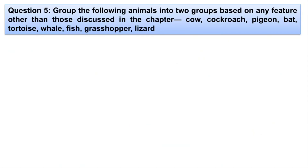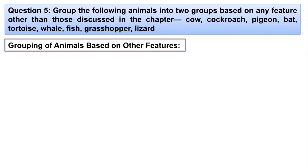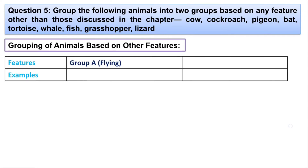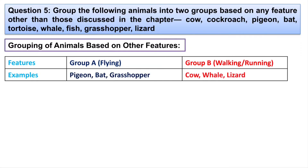Next question: group the following animals into two groups based on any features other than those discussed in the chapter — cow, cockroach, pheasant, bat, tortoise, whale, fish, grasshopper and lizard. One grouping could be flying versus walking or running. Under flying: pheasant, bat and grasshopper. Under walking: cow, whale, lizard and tortoise. Cockroach can be written in the flying section since they can walk as well as fly.